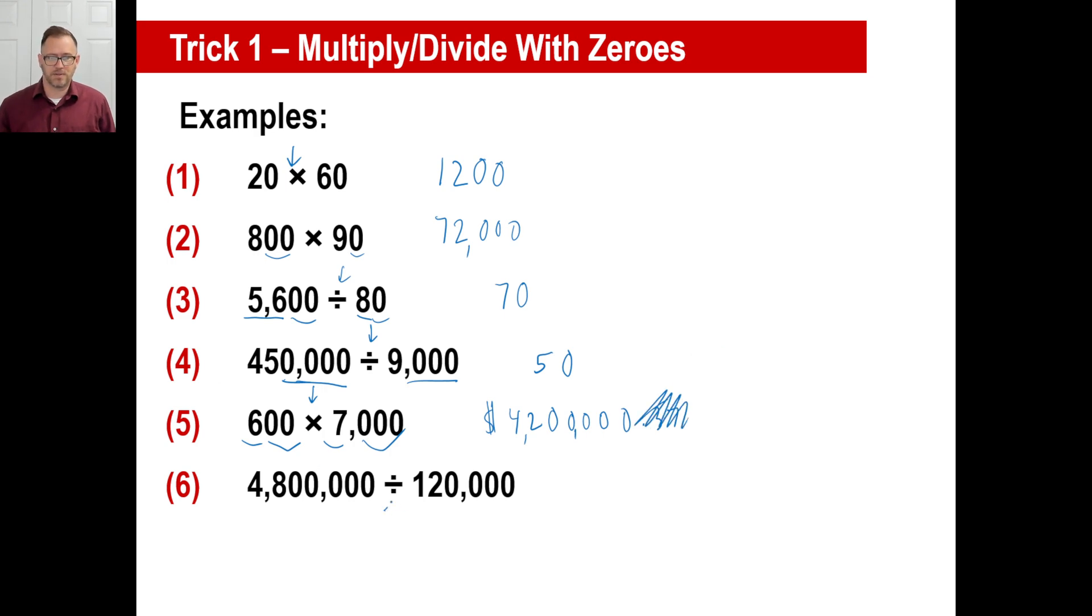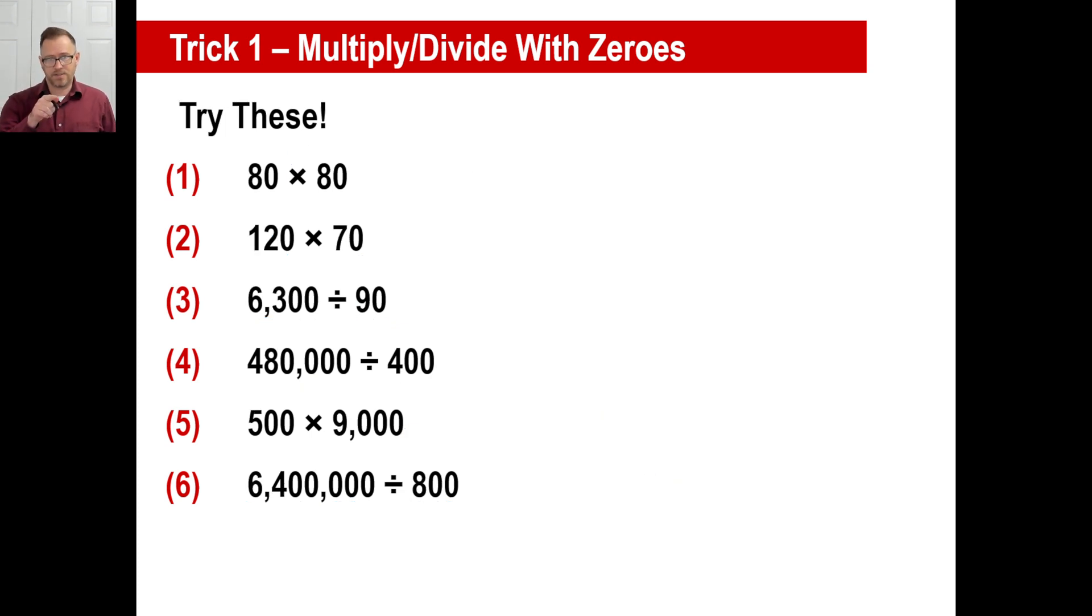Let's do the last one. We divide. We have five zeros. We're going to subtract four zeros, which gives us one zero. Then we go 48 divided by 12 is four. So the answer is 40. Go ahead and pause it, try these and unpause it when you're ready.